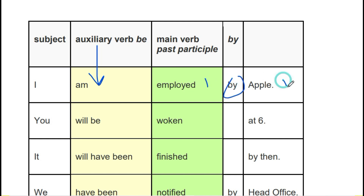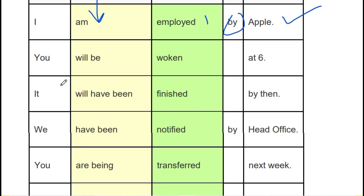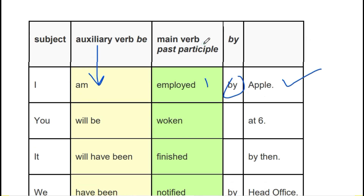'I am employed by Apple' — Apple company has given me employment. 'You will be woken at six.' Notice that all main verbs appear in their past participle form: woken, finished, notified, transferred, paid. The auxiliary verb usage is present in all of these sentences.